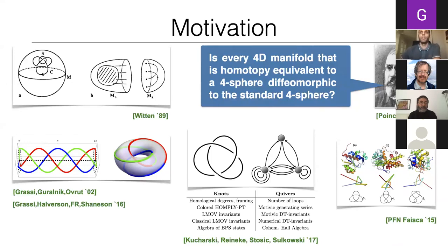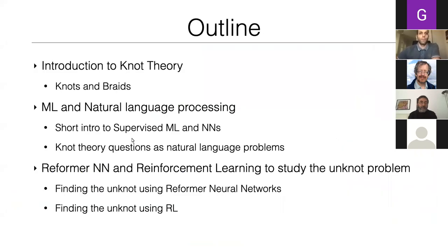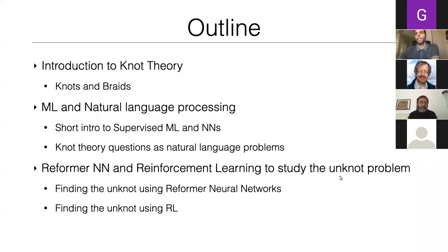This is my motivation for looking at knot theory. My talk has three parts: first, an introduction to knot theory; second, machine learning and natural language processing including a one-slide introduction to supervised machine learning and neural networks; and third, we apply two tools — a reformer neural network, which is state of the art in language processing, and reinforcement learning — to answer the unknot problem.